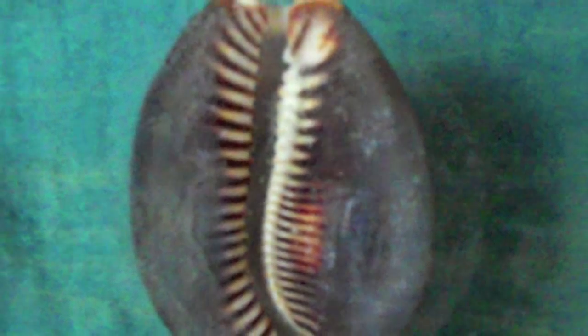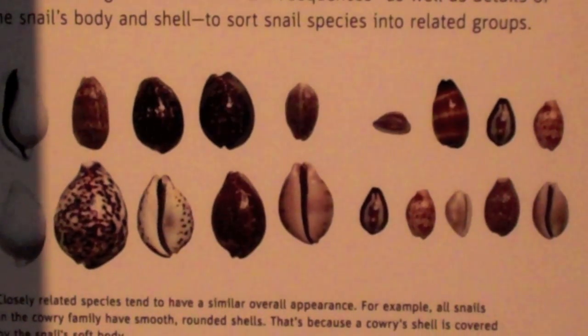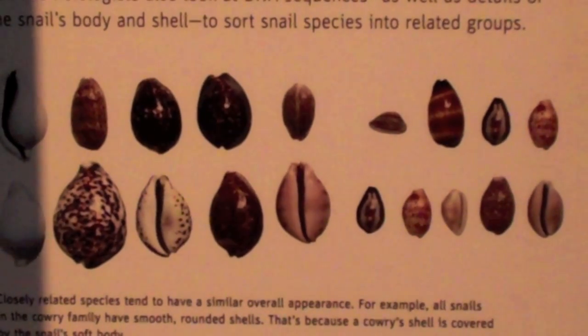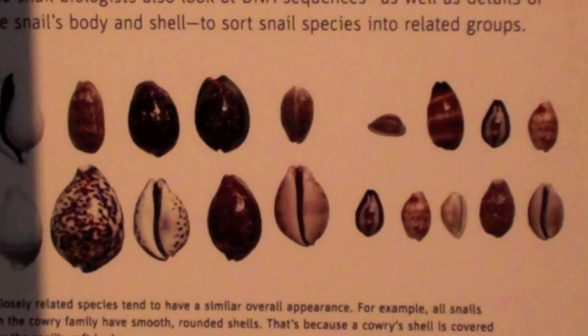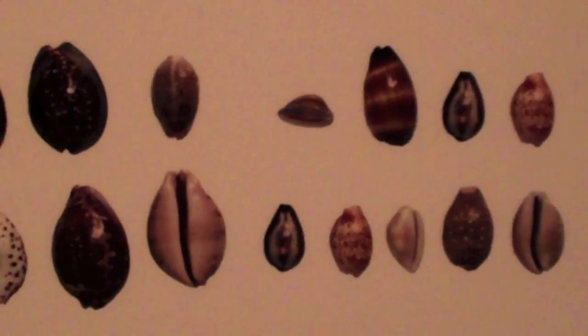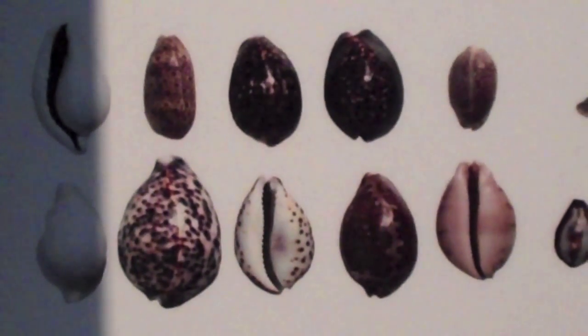Have you ever really looked at a shell and noticed its shape, size, color, or the quality of the texture? If you notice these cowrie shells, they're very smooth. What can account for that smoothness? Was it a particular organism that lived in the shell? How do these shells differ from other shells you may have collected on a beach?